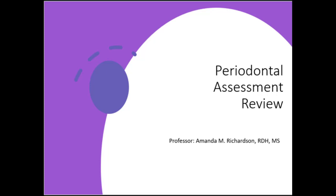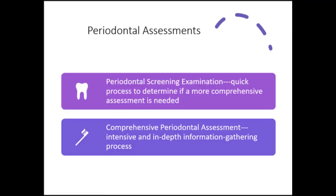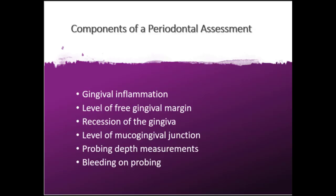In this lecture we will be reviewing components of the periodontal assessment. Most of the information in this video should be familiar to you, so we should be able to move through it pretty quickly. There are two types of periodontal assessment: the first is PSR, which is a quick process to determine if a more comprehensive assessment is needed, and the other is a comprehensive periodontal assessment, which is much more in-depth. In this review we're going to be discussing the components of a comprehensive periodontal assessment.